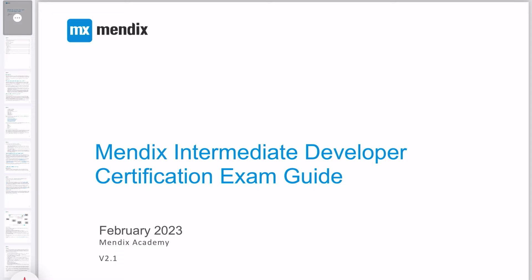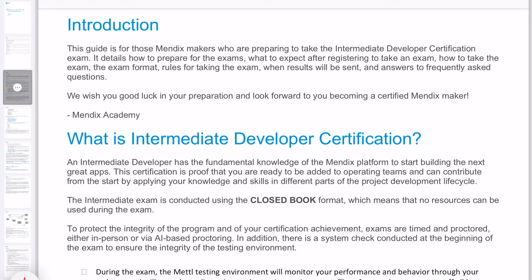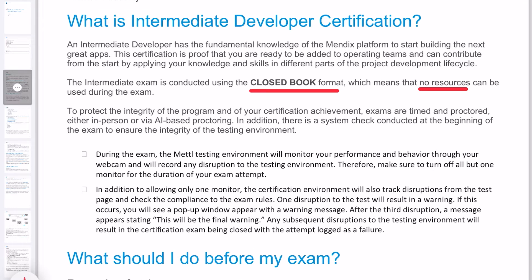Now let's take a look at the Mendix intermediate developer exam guide. It is a closed format exam, so you cannot access any resources during the exam. You can take this exam in person or online. If taking it online, it is AI-based proctored using the Mettl testing environment. Your whole exam will be recorded and sent to Mendix, who will review it along with AI-generated images captured during the exam. You will get your results after they process your exam manually.